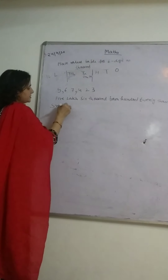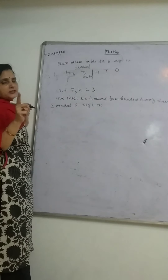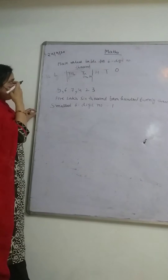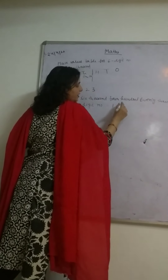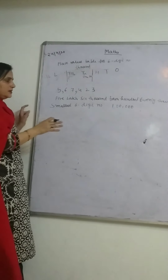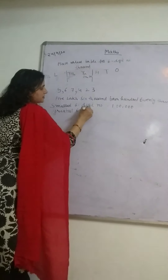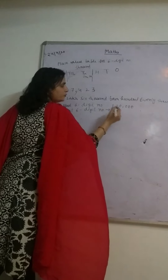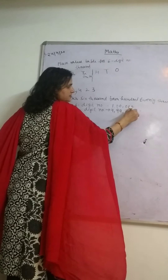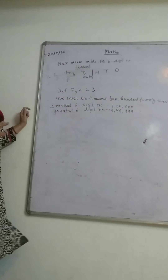The smallest 6-digit number: all smallest numbers are made up of the combination of 1 and 0. So at the highest place — which for a 6-digit number is the lakh place — we write 1, and all other places are 0. For the greatest 6-digit number, we write 9 at the highest place and 9 at every other place. So 9,99,999 is your greatest 6-digit number.